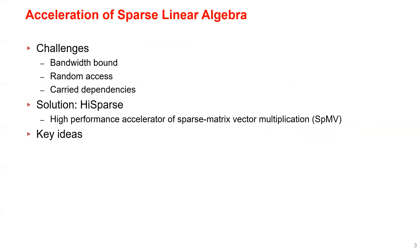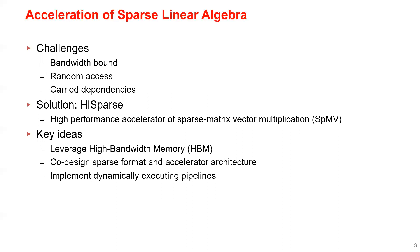The key ideas of HiSparse are first leveraging HBM to get higher available memory bandwidth, and then co-designing the sparse matrix format and accelerator architecture to better utilize the memory bandwidth, and finally implementing dynamically executing pipelines to deal with the random accesses and data dependencies.